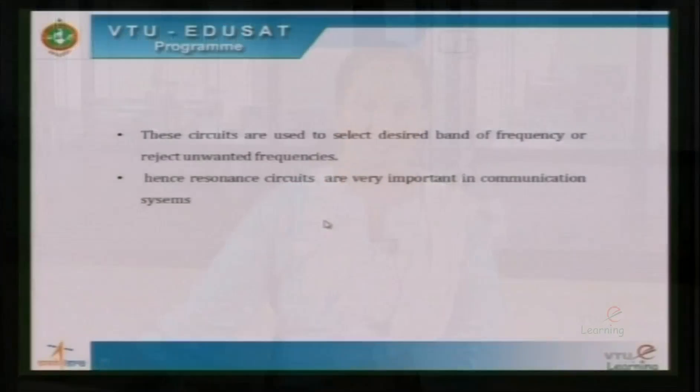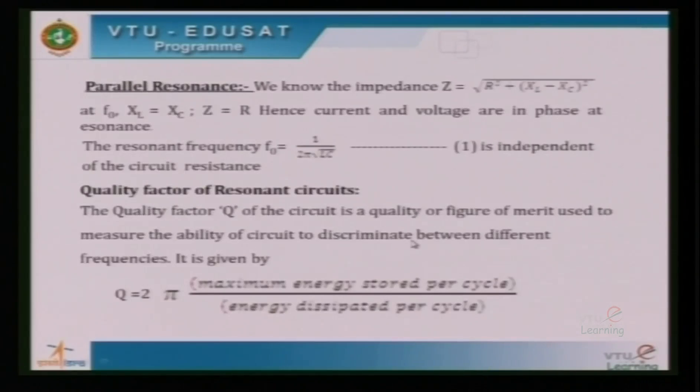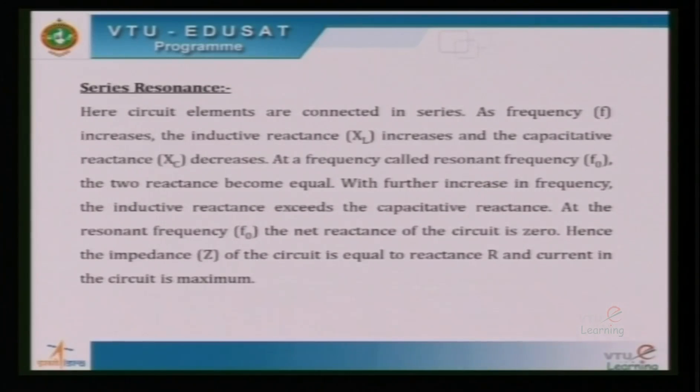Theoretically, the resonant frequency is given by the formula 1/(2π√LC). Substituting the chosen values of L and C gives 5 kHz. Experimentally, from the graph, it comes to around 4.8 kHz. The same graph can give further results — important parameters of the LCR circuit, such as the quality factor. The quality factor is the figure of merit used to measure the ability of the circuit to discriminate between different frequencies.